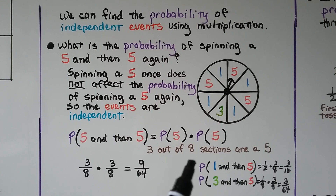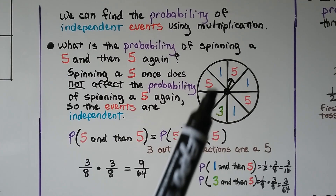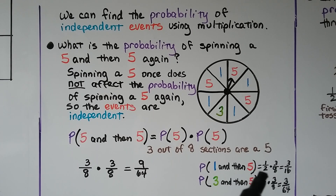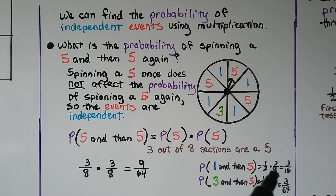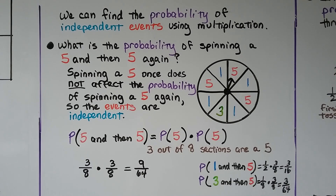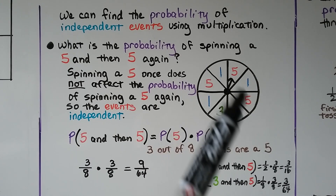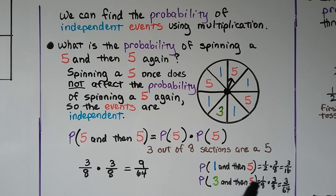If we wanted the probability of spinning a 1 and then a 5: there are eight sections and four of them are a 1, so we have 1/2 for spinning the 1, and 3/8 for spinning the 5. So the probability of spinning a 1 and then a 5 is 3/16. There's only one 3 out of eight sections, so that's 1/8. The probability of spinning a 3 and then a 5 is 1/8 times 3/8, which equals 3/64.